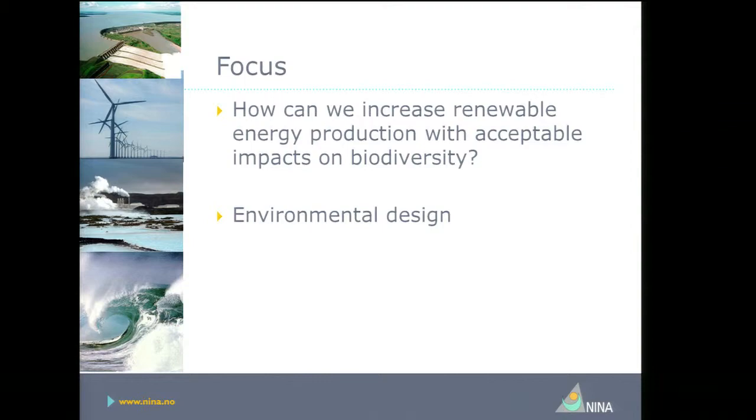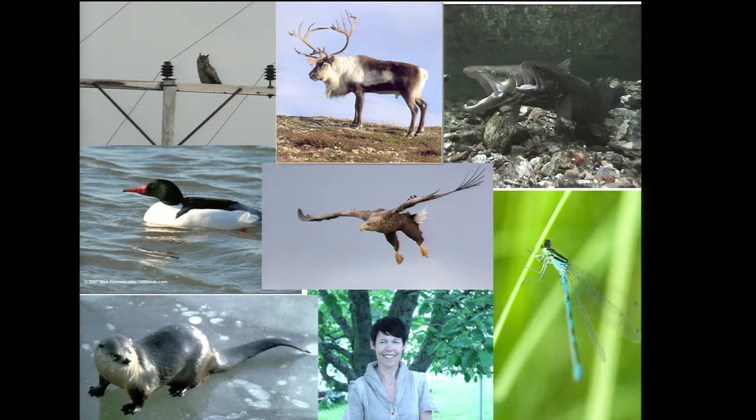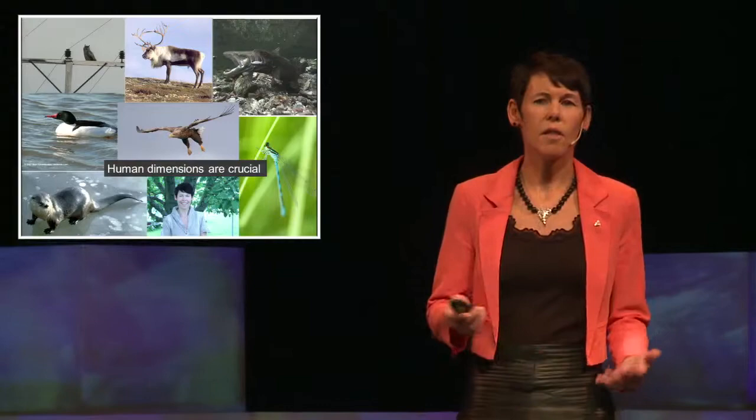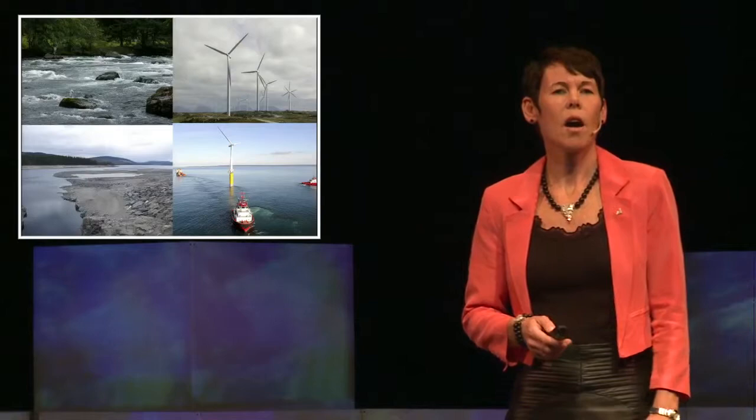Let's start with the species. Renewable energy production affects several species: birds, mammals, fishes, insects, and also people. Human dimensions are crucial in this matter. We are working with several energy forms, primarily hydropower and wind power.